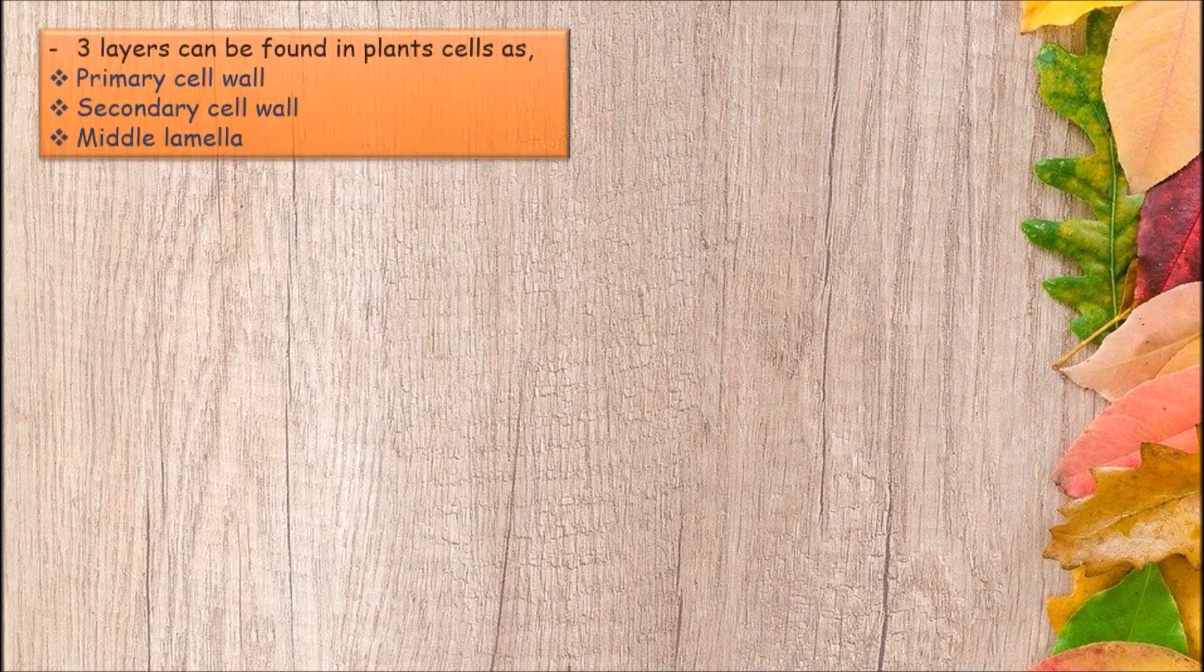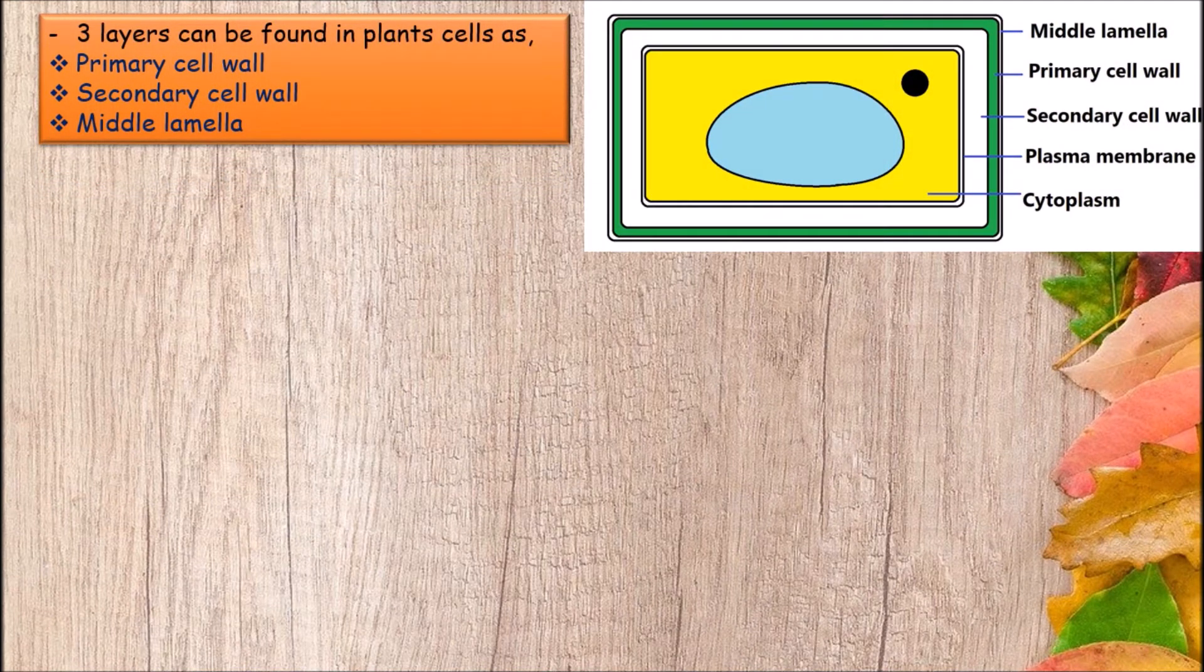Three layers can be found in plant cells as primary cell wall, secondary cell wall, and middle lamella.